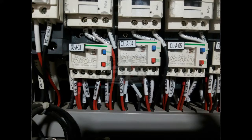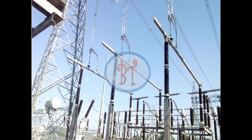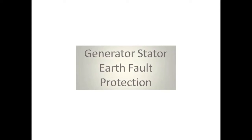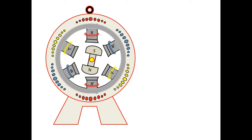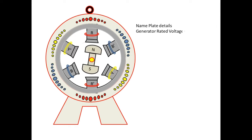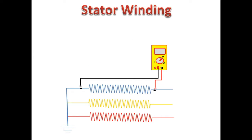Welcome to Barney Tech channel. Here we are going to see about stator earth fault protection. In order to explain this, I am going to take a very low voltage generator rating — let us consider it is a 440 volt generator. The outgoing voltage of the generator is produced on the stator winding only.